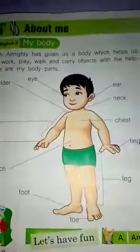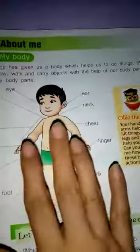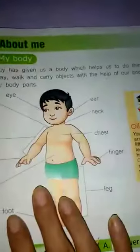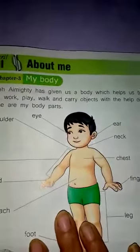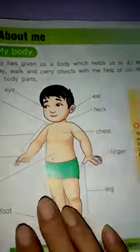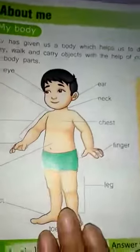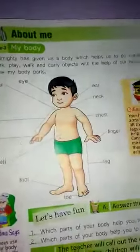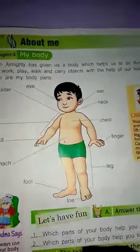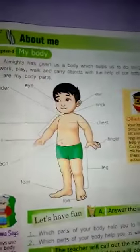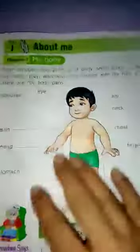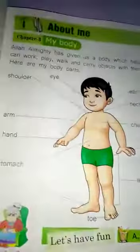So what is this chapter about? This chapter tells us about our body, which is blessed by Allah. Our body and its parts are blessed by Allah, and through them we can do things — different tasks. We can work, play, carry objects, and do different activities with the help of our body parts. Everyone has the same body parts.